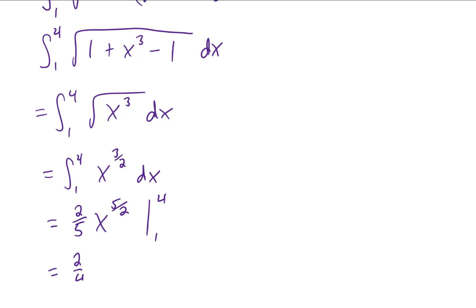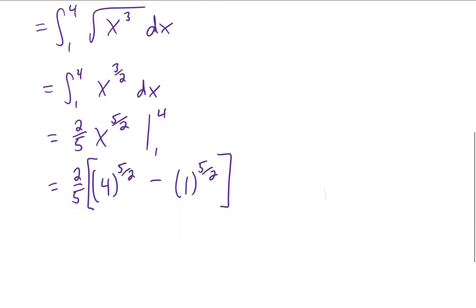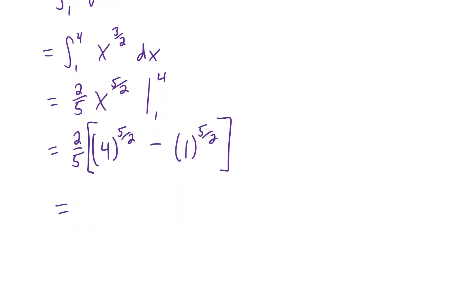Plugging in our upper and lower limits of integration gives us this right here, and I think that we can simplify this. Four to the five halves power. Well, the two in the denominator means that we can take a square root of four.